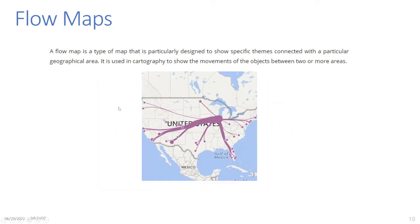Flow Maps: A flow map is a type of map particularly designed to show specific themes connected with a particular geographical area. It is used in cartography to show the movements of objects between two or more areas. In the example shown, you can see the movements and the volume of movement between different regions.